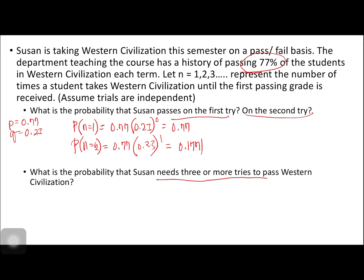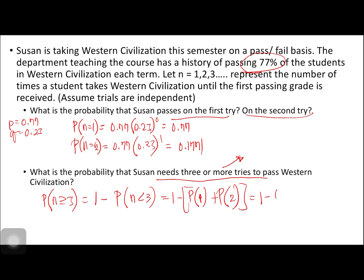What is the probability that Susan needs 3 or more tries to pass Western Civilization? P(n ≥ 3) equals 1 minus the probability of n less than 3, that is 1 minus P(1) plus P(2), which is 1 minus 0.77 plus 0.1771, and that is equal to 0.0529.